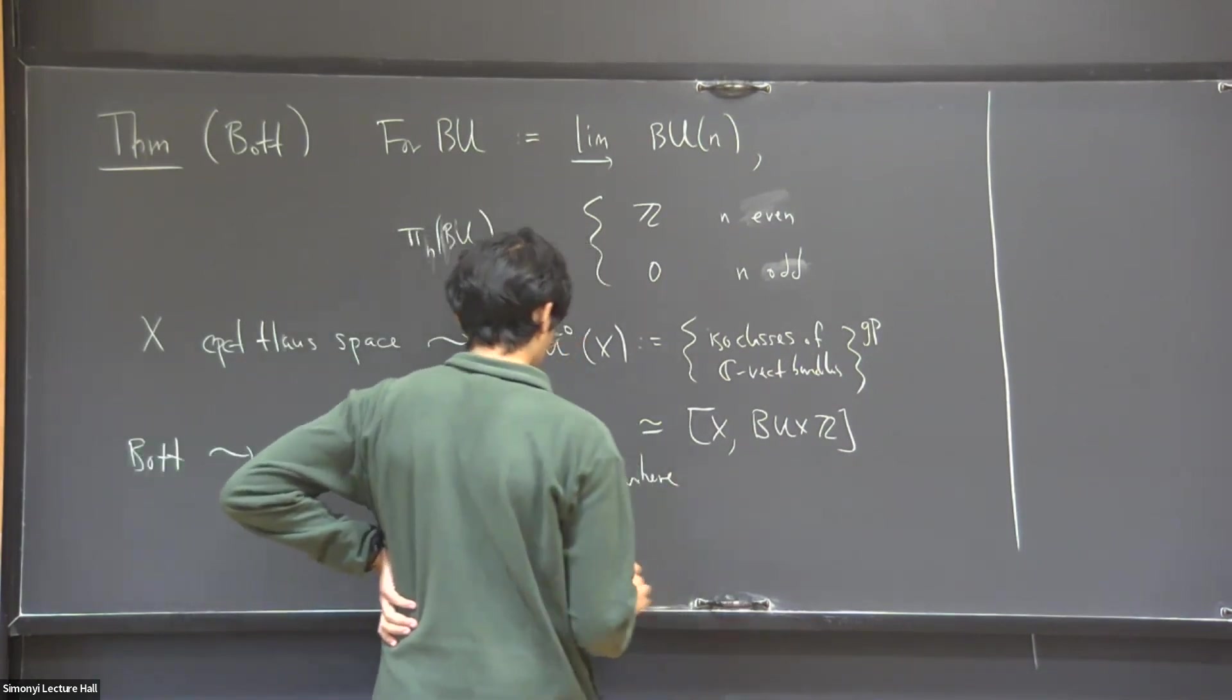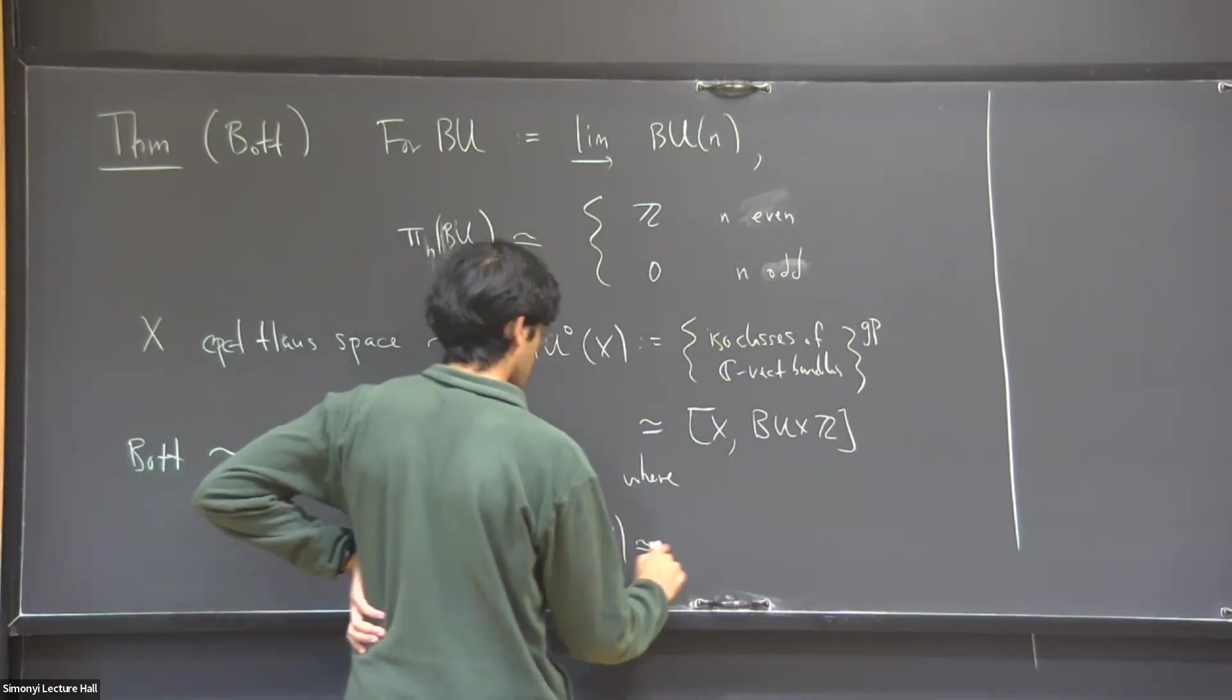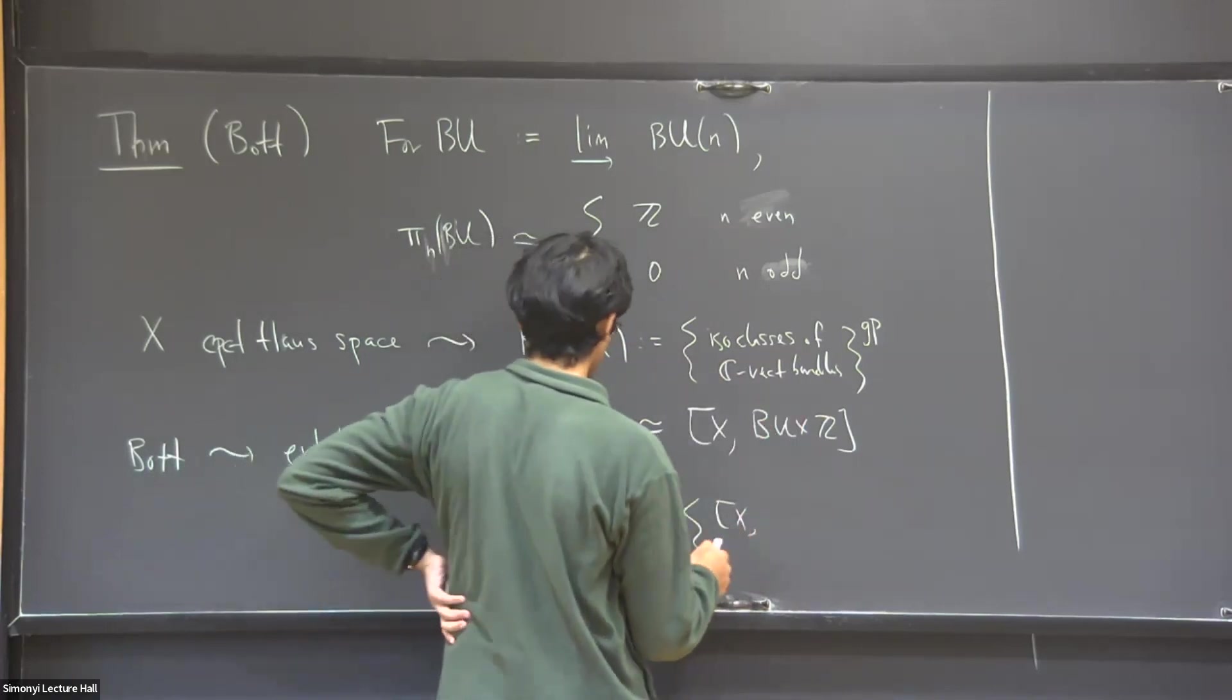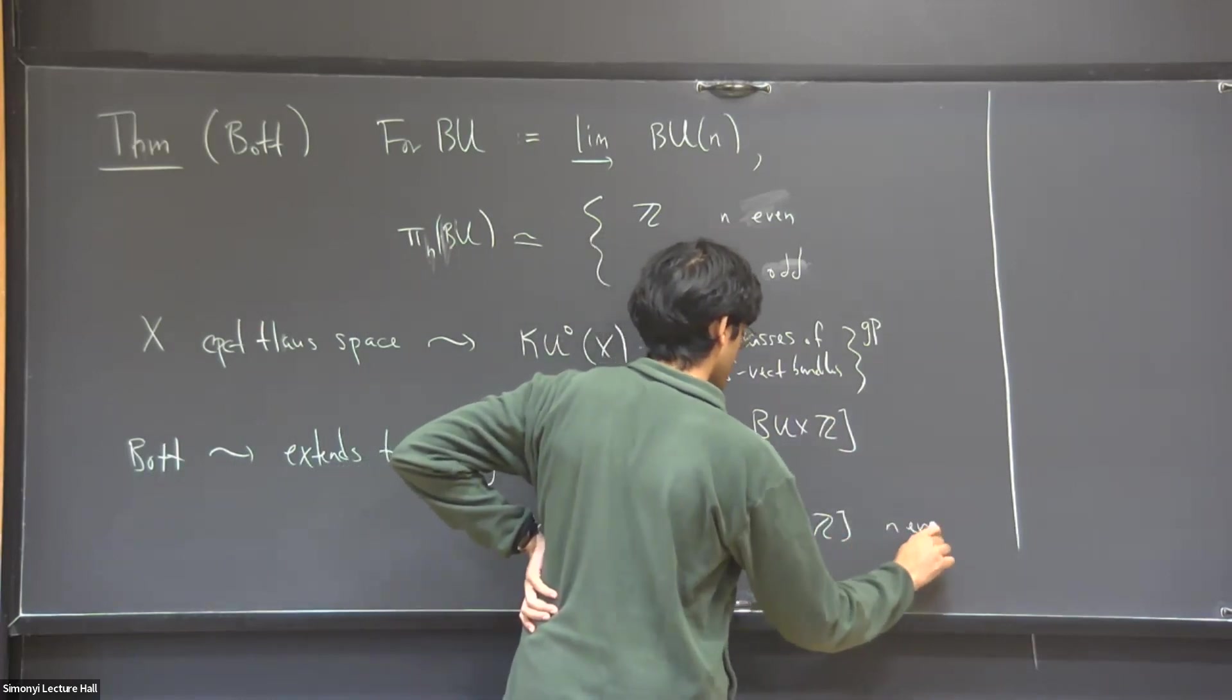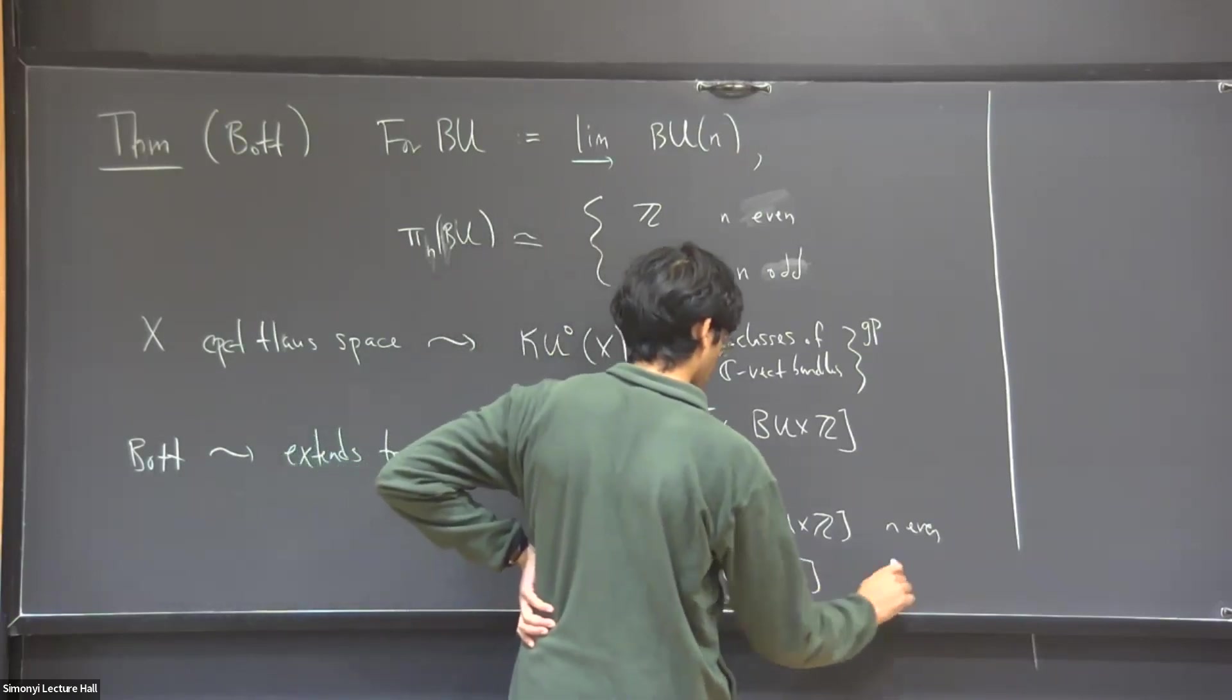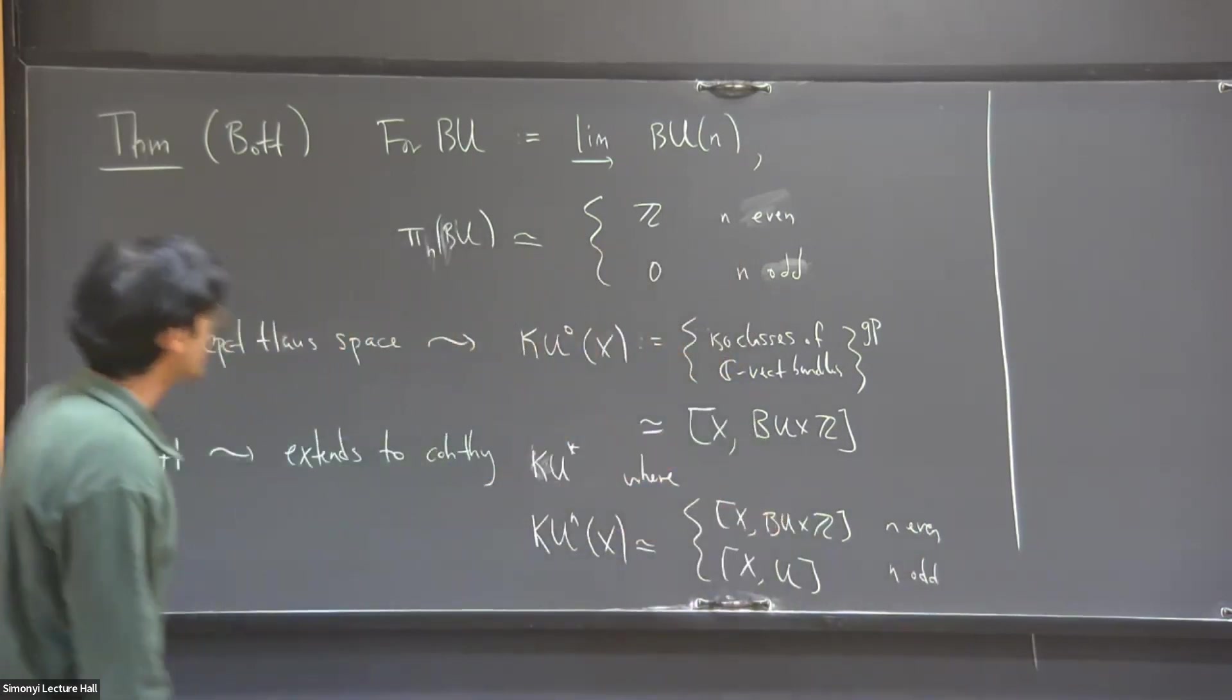And in this case, what's happening is that KU^n of the space is either this thing, which is basically having to do with complex vector bundles in the even case, and then it has to do with maps from X into just the unitary group that I started with in the odd case. So it's a two-periodic theory, and that's coming from the two-periodic theory in Bott's theorem.